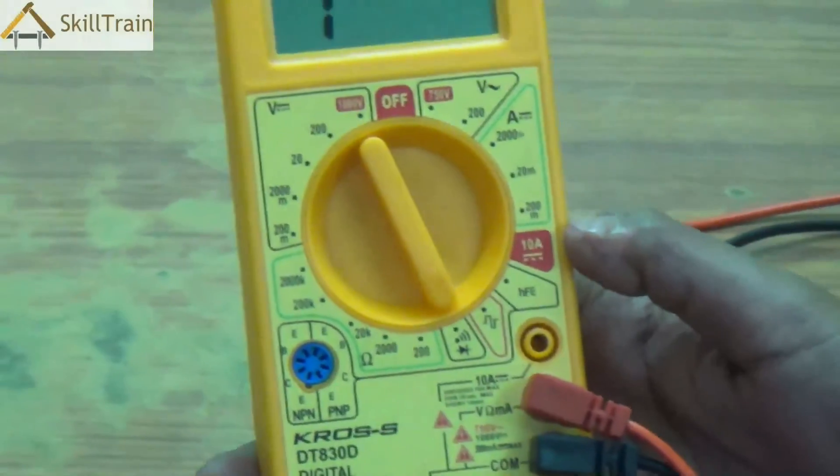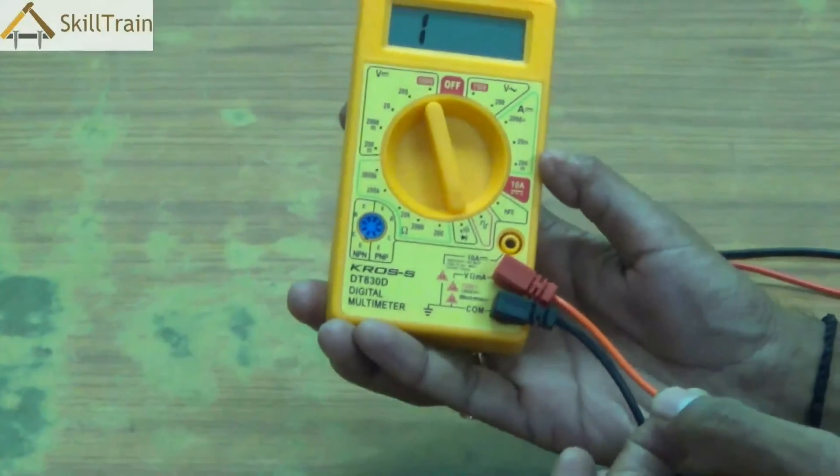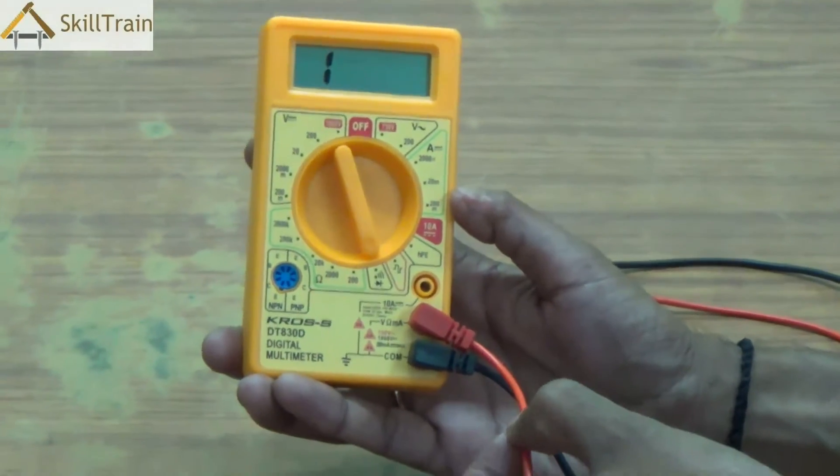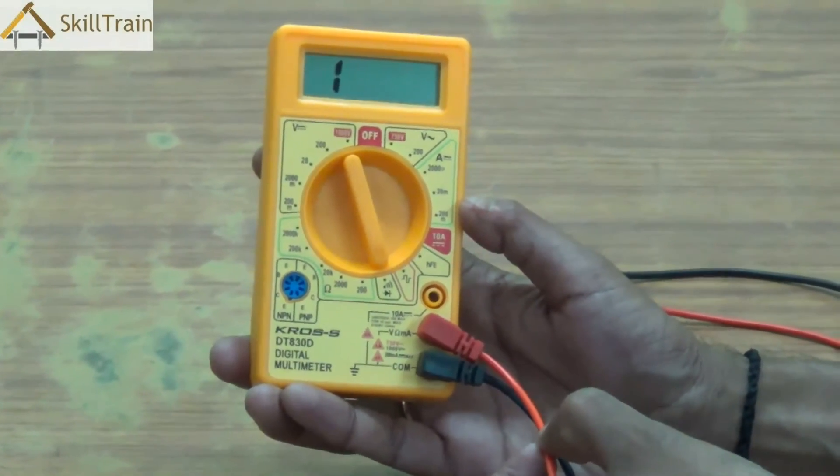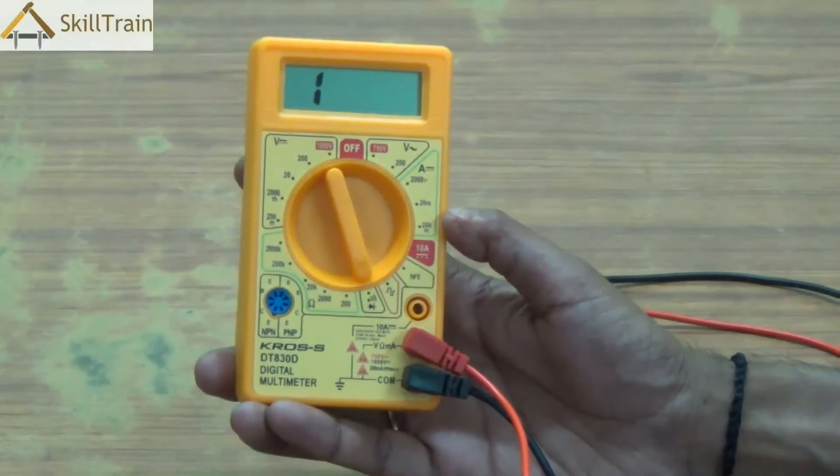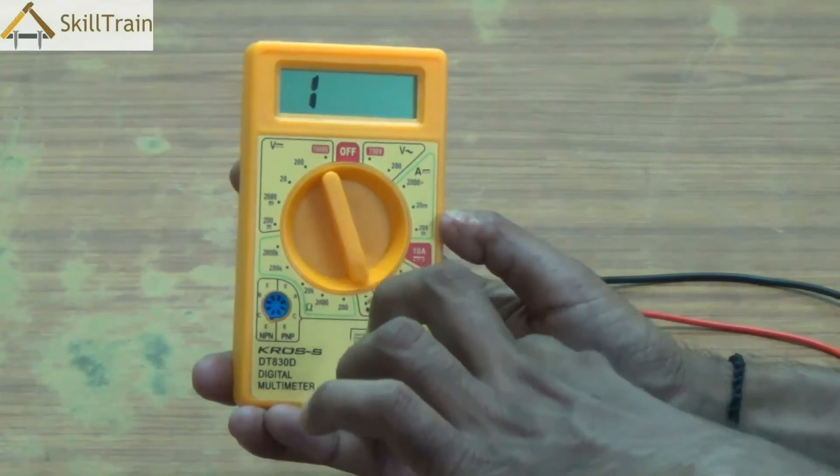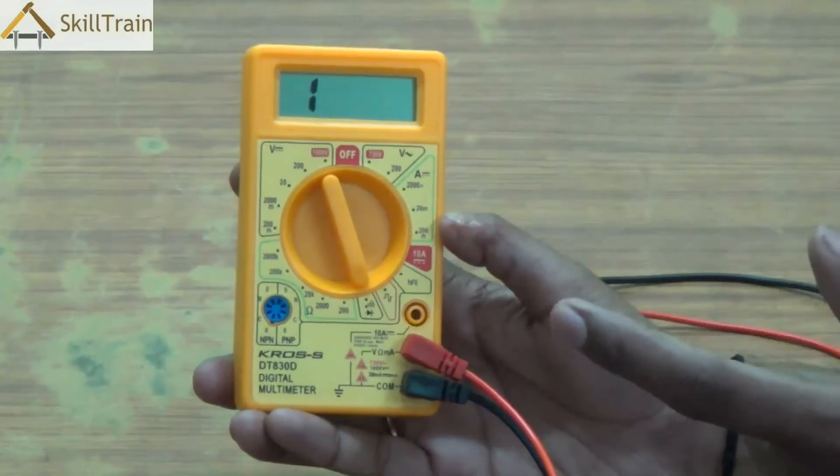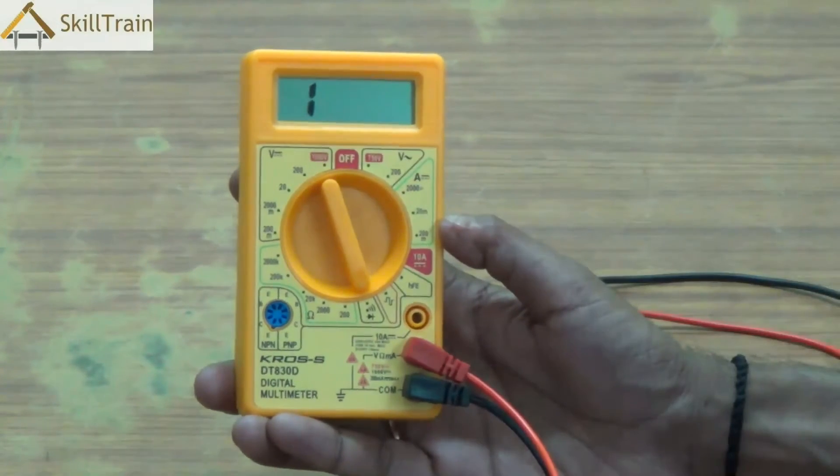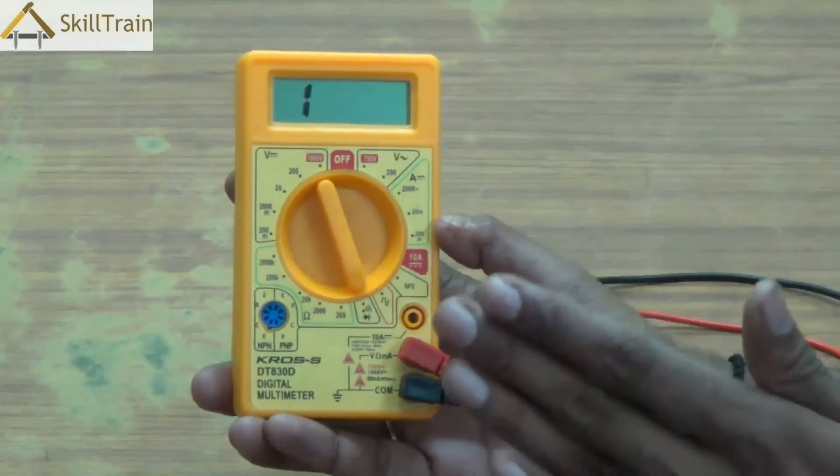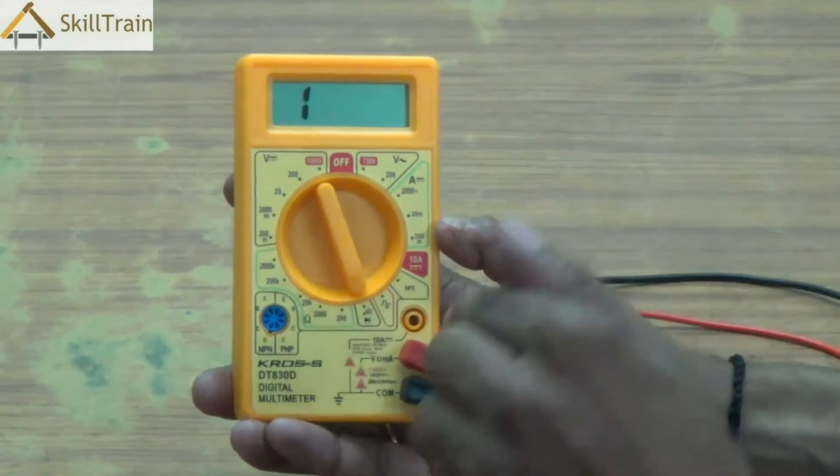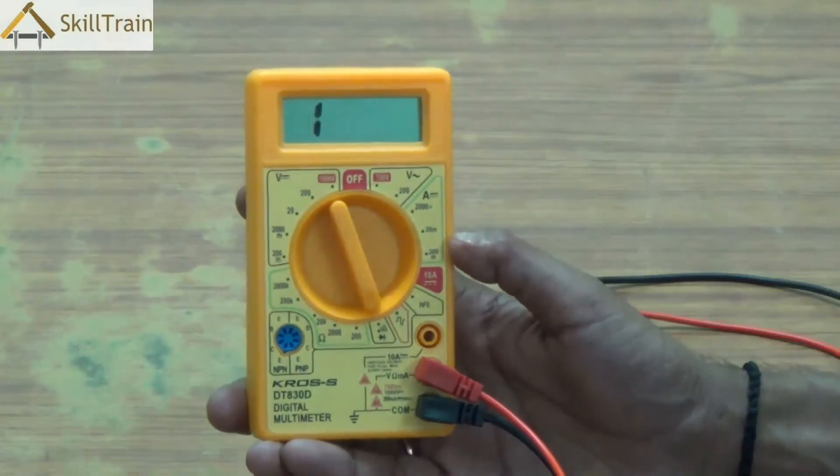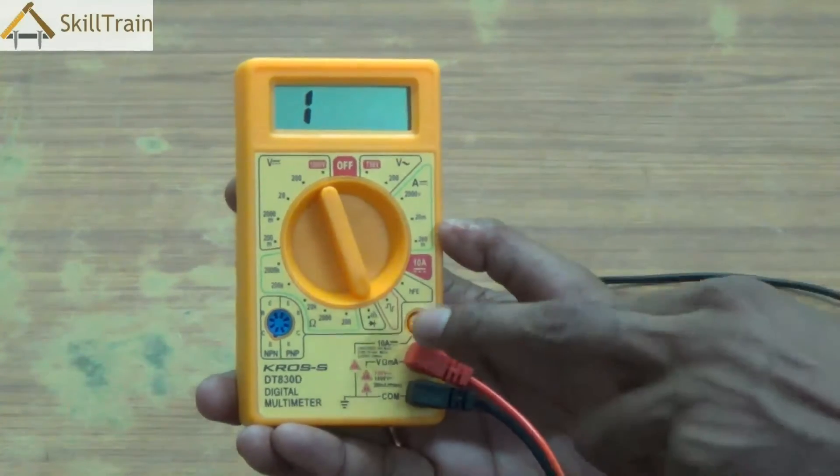The reason why we do this beep testing is, for example, when we are checking a wire and we want to check whether the wire is broken in between. Typically, broken wires are called open wires. So if you want to check whether the wire is broken from inside, you will not be able to find it out looking at it from the outside. So in order to check the continuity, we use the beep or continuity testing, which means you touch the two ends of the wire using the black and red probe, and if you hear a beep sound, it means that the circuit is not open and the wire is proper. But if you don't hear a beep, it means that the circuit is broken somewhere and you need to fix it.